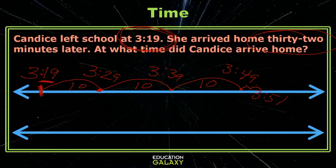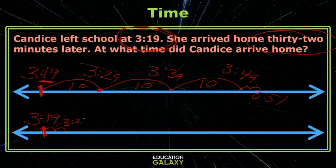Maybe you'd like to do that a different way. Maybe you'd like to count the 2 of the 32 first. Are you allowed to do that? Of course you can — if that works for you, that's just fine. So let's count that 2: 1 is 3:20, 2 is 3:21.